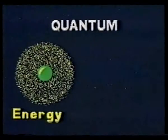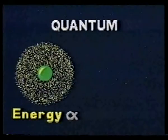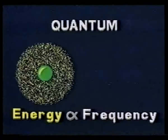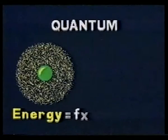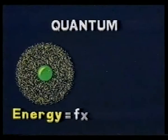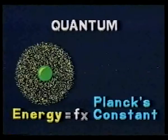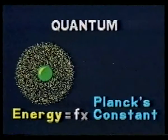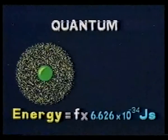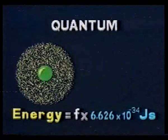Planck proposed that the energy of each quantum emitted is determined by the frequency of the radiation. In other words, it is equal to the frequency times a constant. Planck roughly calculated this constant, and he used it to predict energy emissions by atoms.